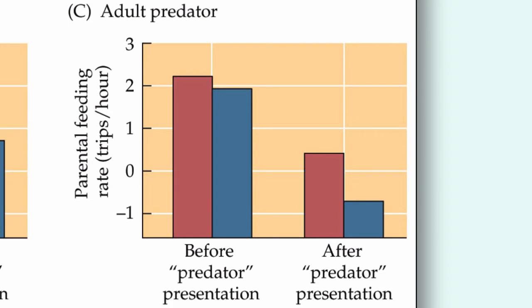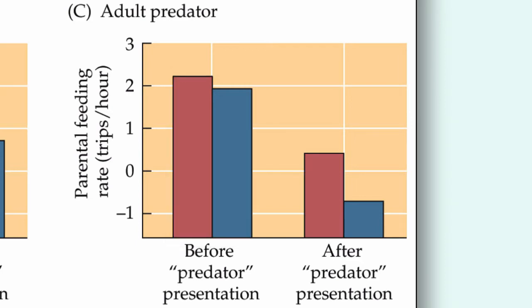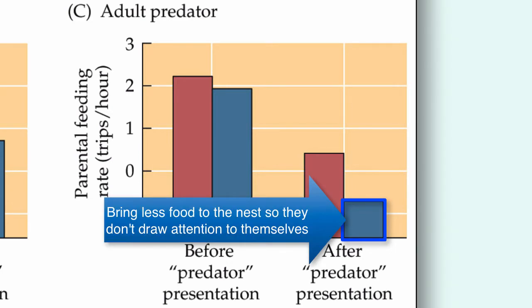In a similar study, where an adult predator was presented — something potentially dangerous to the adult individuals — you see a different outcome. Before the predator presentation, feeding rates are high in both temperate and tropical species. However, after presentation of the adult predator, North American birds do decrease their parental feeding rate, but not nearly as much as the South American birds do. The South American birds want to minimize any potential threat to themselves, so they almost shut down their parental feeding rate until the threat has passed.